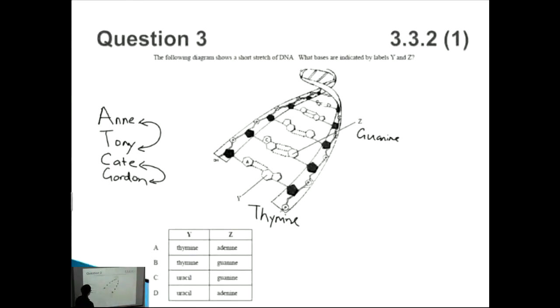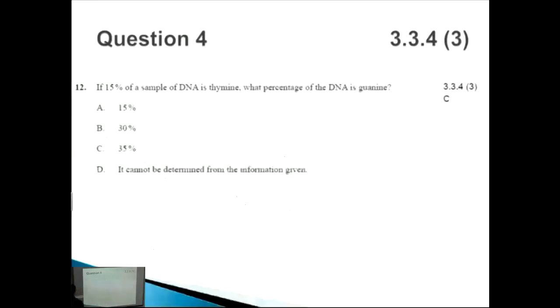So now if we bring our answers back to the question, what is Y? Y is thymine, so it can't be uracil because remember uracil is only for mRNA. And how about Z? So Z is guanine, so that's this one here. Easy question.